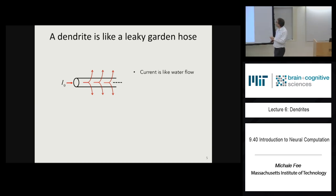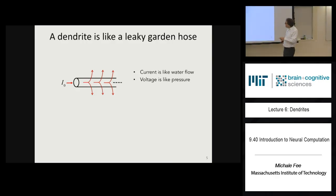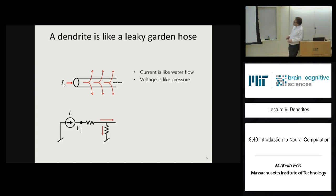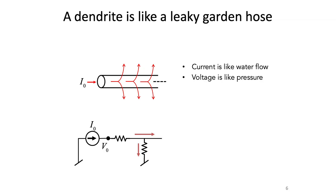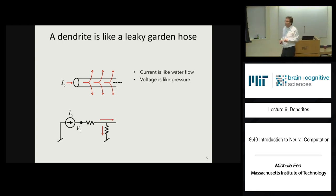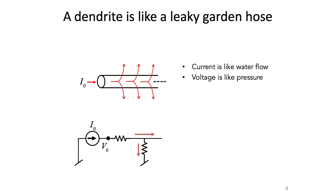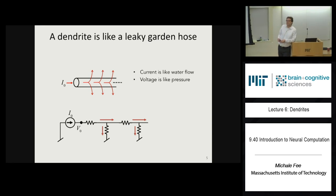The general analogy is that current is like the flow of water, electrical current is like water current flowing down the pipe, and voltage is like pressure. We're going to develop an electrical circuit model for a dendrite that looks like a set of resistors going down the axis and a set of resistors going across the membrane — each little piece acting like a resistor divider. As you make a longer piece of dendrite, each voltage divider divides the voltage by some constant factor.